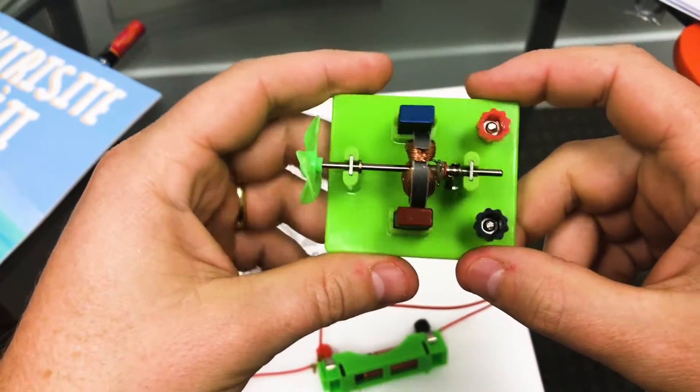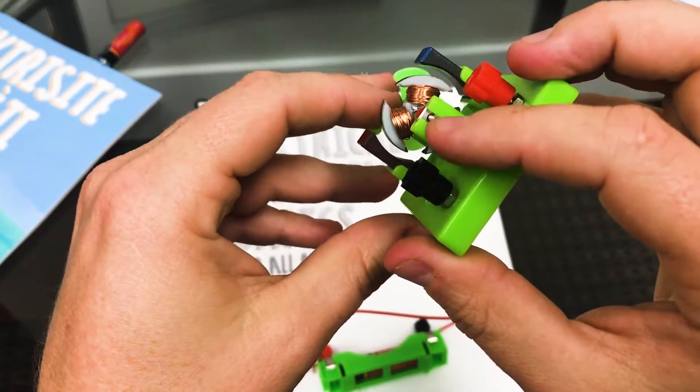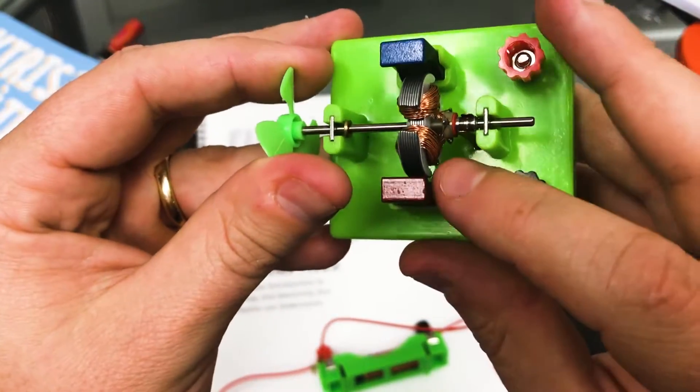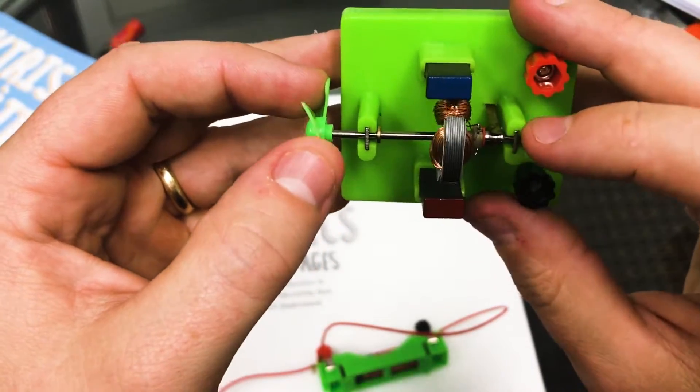It just shows you how truly simple these little motors are. On a regular DC motor, it's these brushes that would tend to wear out because it has to have this constant friction.